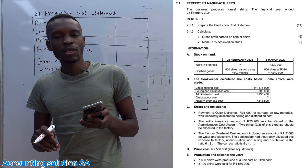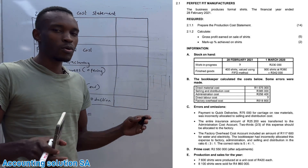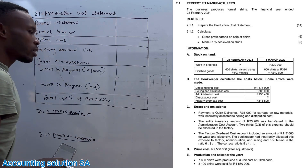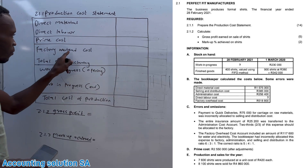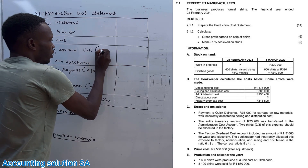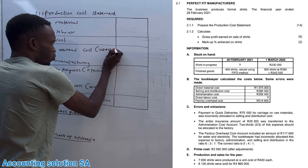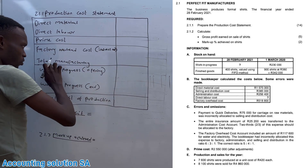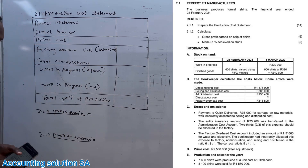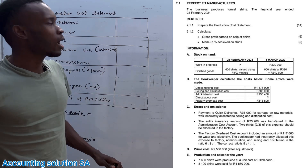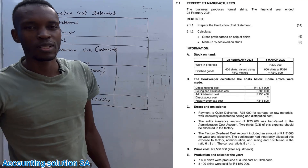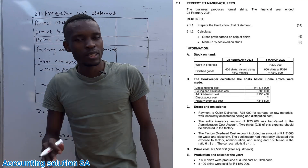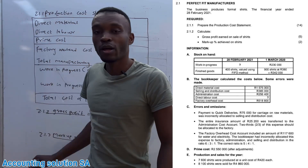When you calculate the production cost statement, know the format just like you do for the income statement. You start with direct material plus direct labor, which gives you prime cost. Then you add factory overhead, which we also call indirect cost. That gives you total manufacturing cost. Only allocate items that fall under production — administrative, selling and distribution expenses must not be included here.